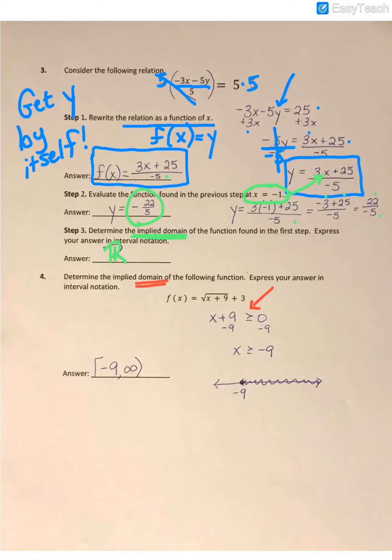So then get x by itself, subtract 9 on both sides, and I'm left with x ≥ -9. Now since it's equal, that means there's a solid point at -9, and then greater than would be everything shaded to the right.